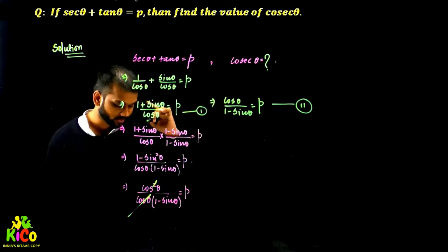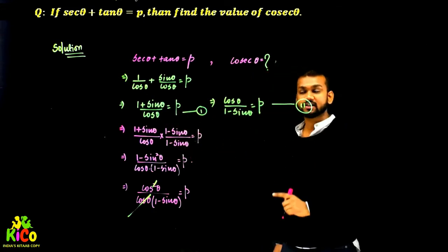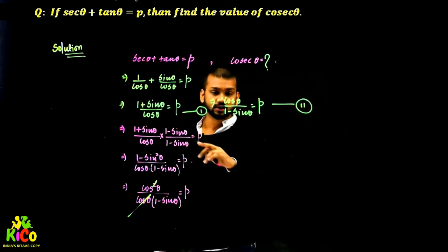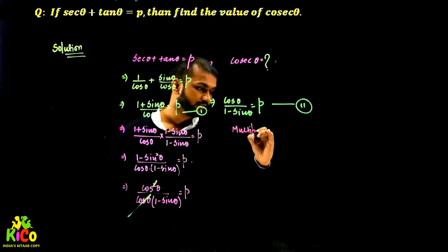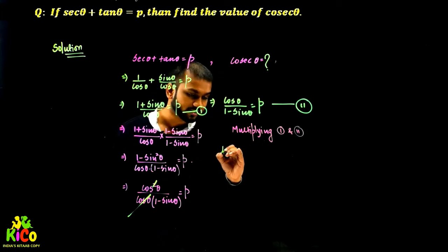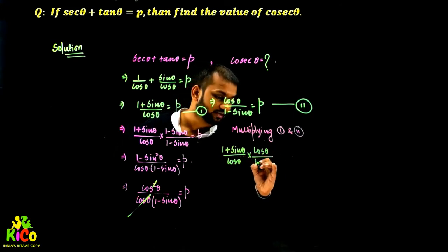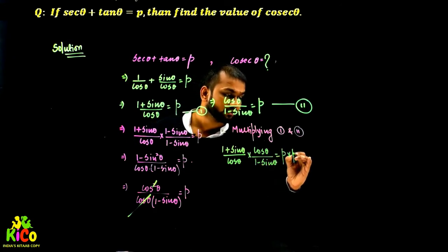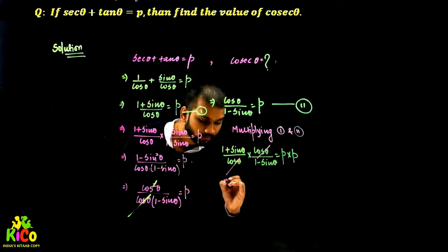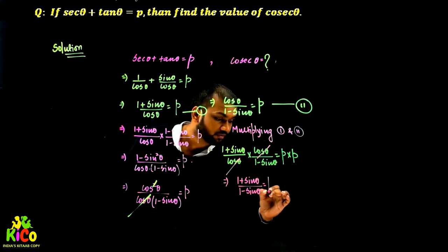Now we have two equations: equation 1 is (1 plus sin θ) upon cos θ equals P, and equation 2 is cos θ upon (1 minus sin θ) equals P. If we multiply the left-hand sides together and the right-hand sides together, we get: (1 plus sin θ)/cos θ multiplied by cos θ/(1 minus sin θ) equals P times P, which is P². The cos θ terms cancel out, leaving us with (1 plus sin θ) upon (1 minus sin θ) equals P².